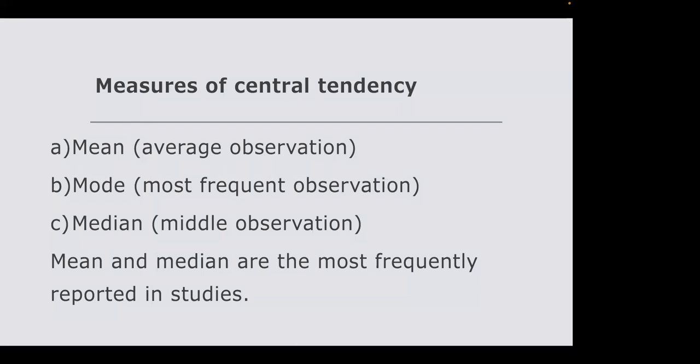If you include an outlier like a 30-year-old in a sample mostly aged 16–17, the mean age could shift to 18 even though only one person exceeds that age. In such cases, the median is a better measure of central tendency. You can also use the interquartile range — the difference between the upper, middle, and lower quartiles — as your measure of central tendency.